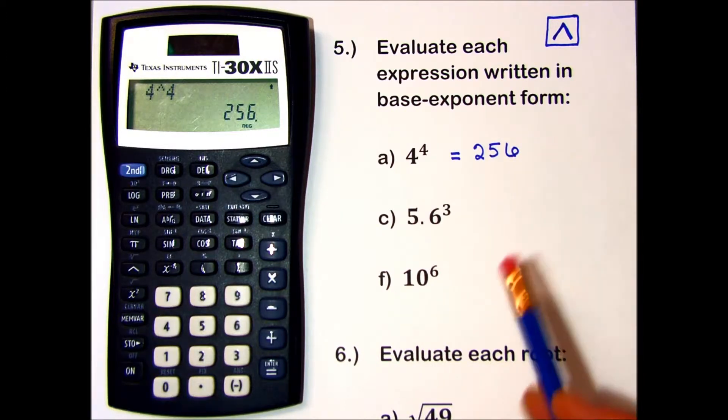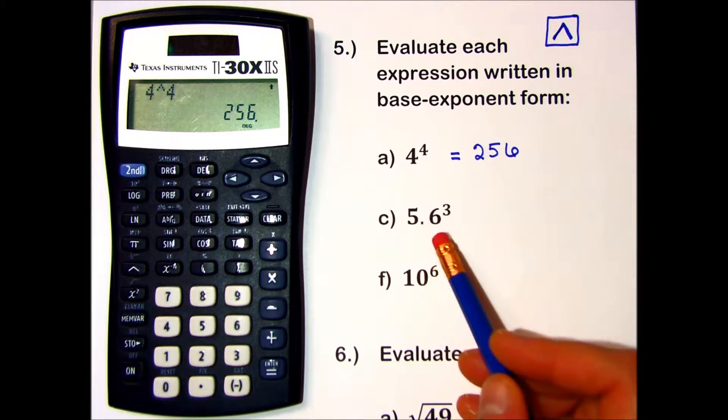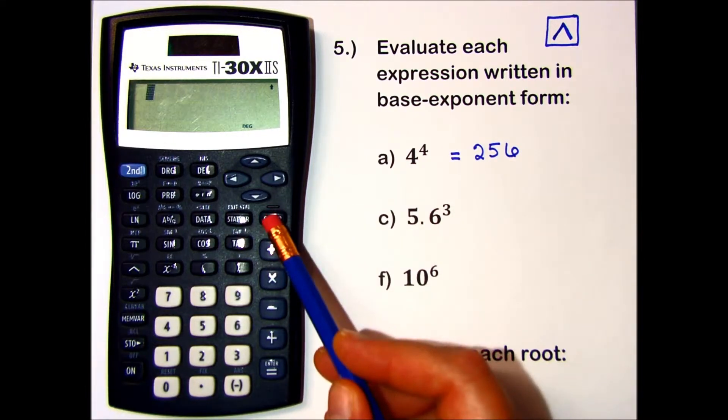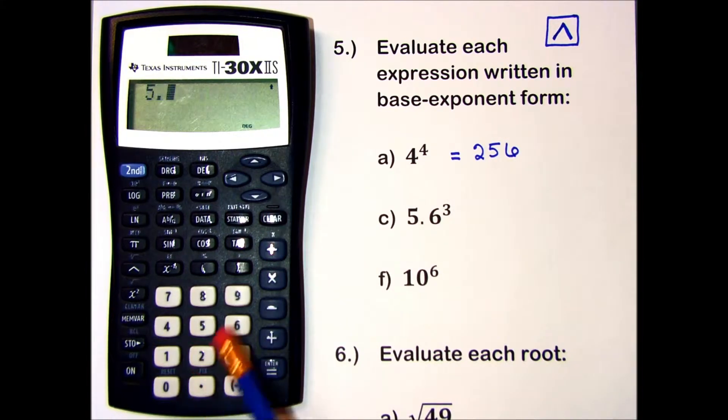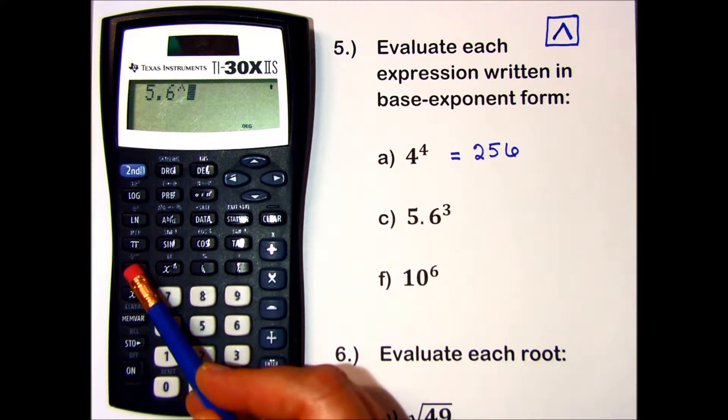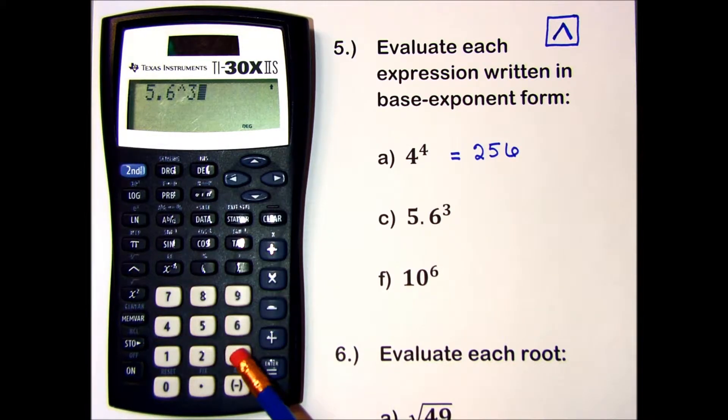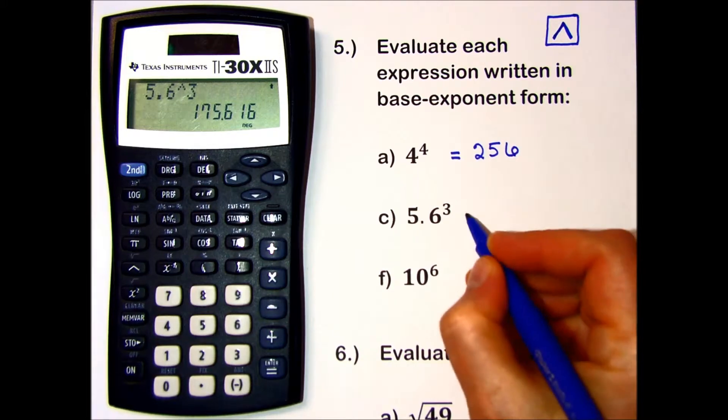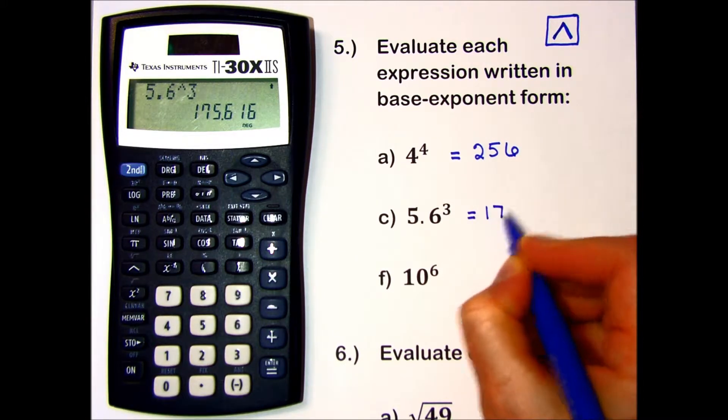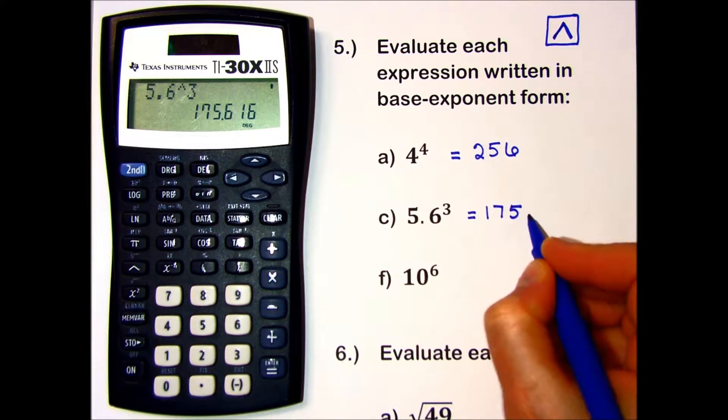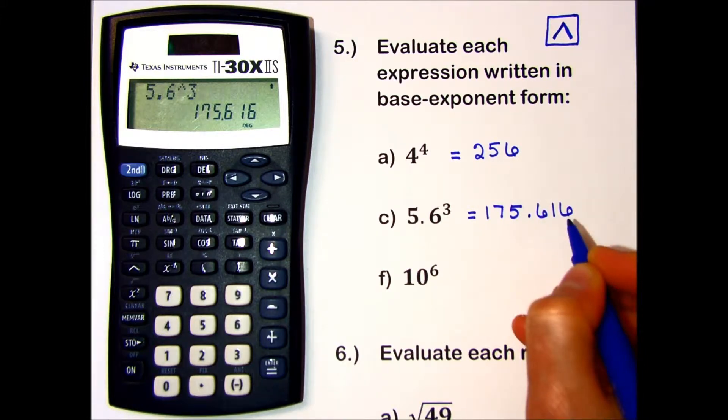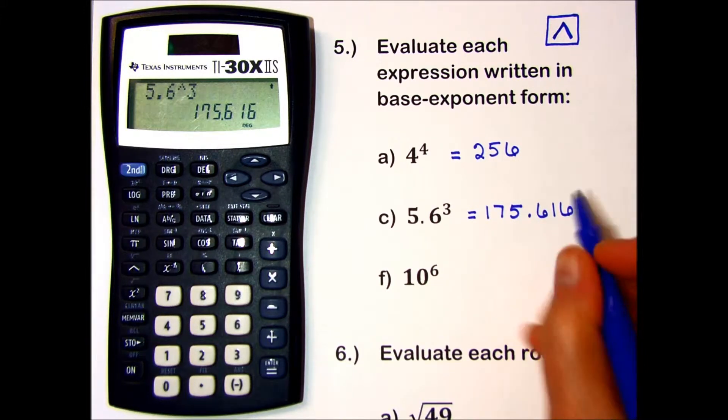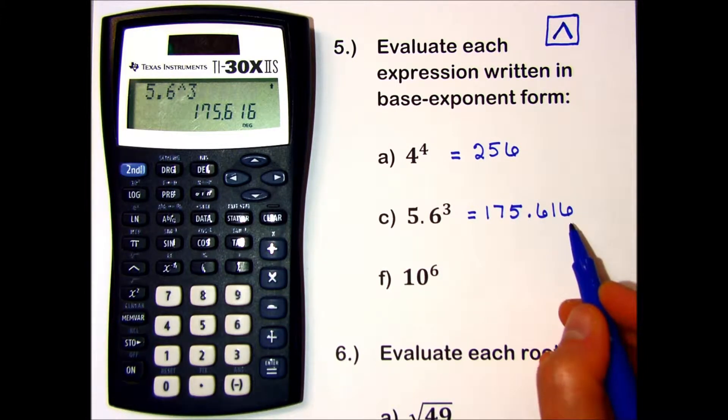For part C, I have 5.6 cubed. Let's enter that: 5.6 to the power of 3. Press the equals sign, and my answer is 175.616. The directions say to round to 3 decimal places, so I'll keep those numbers.